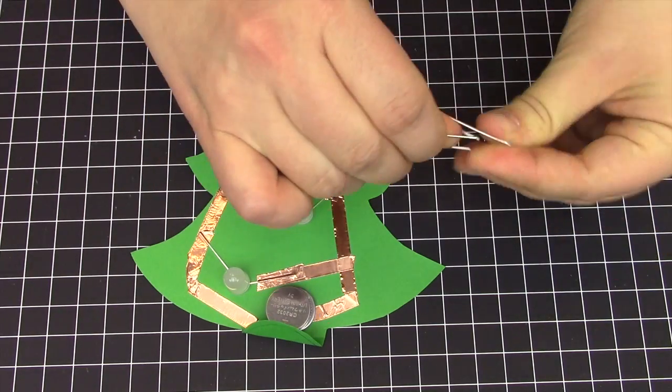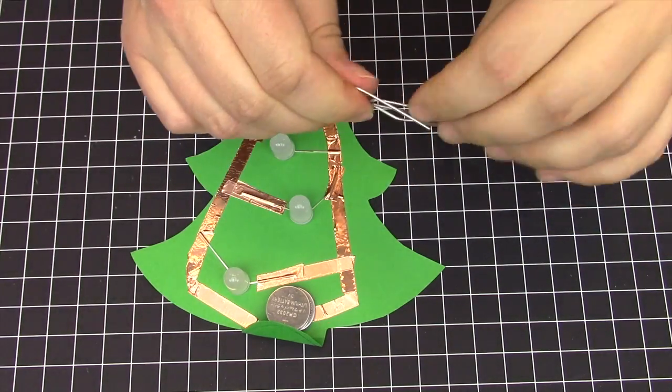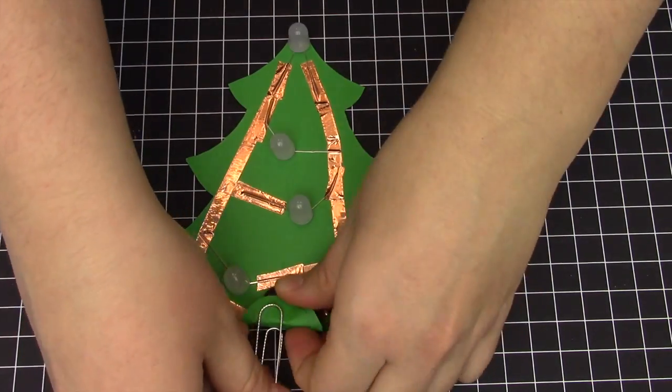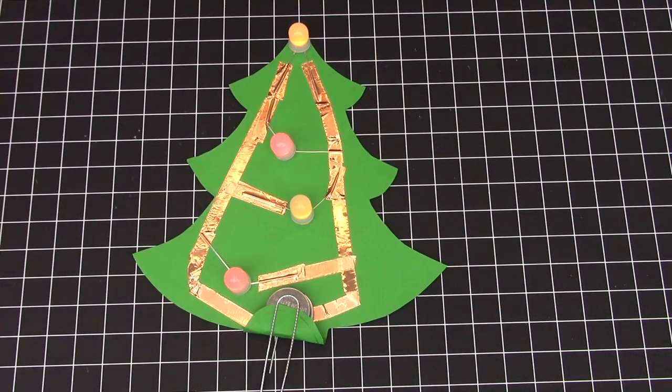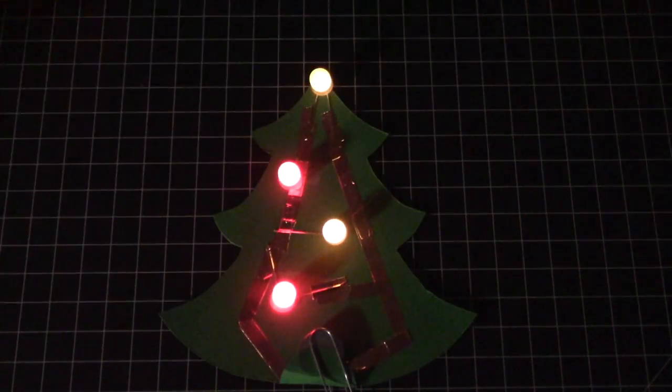And finally, take your jumbo paperclip and fold it as shown to hold your batteries in place. Your holiday tree is complete.